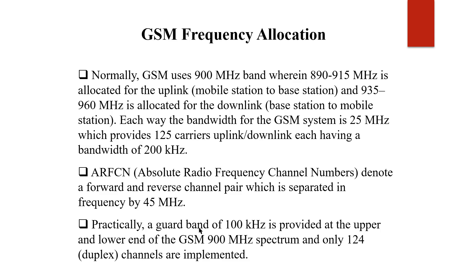A guard band of 100 kHz is provided at the upper and lower ends of the GSM 900 MHz spectrum, and only 124 channels are implemented. Although 125 channels of 200 kHz are distributed across the 25 MHz band, only 124 are used — one channel is reserved.